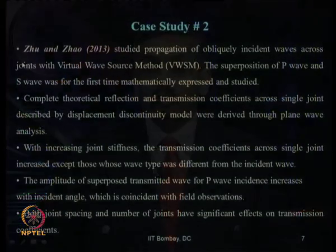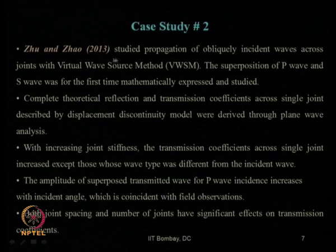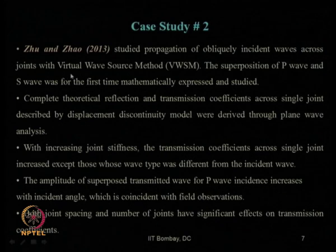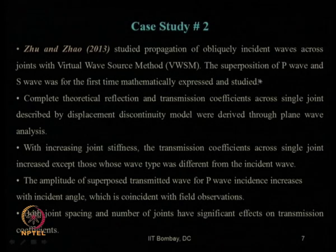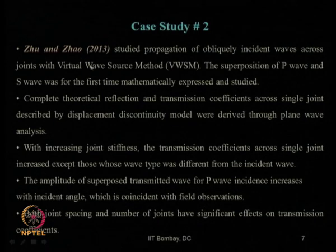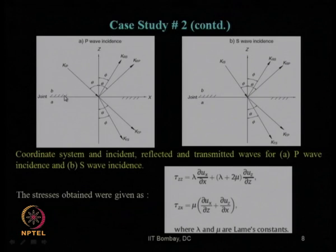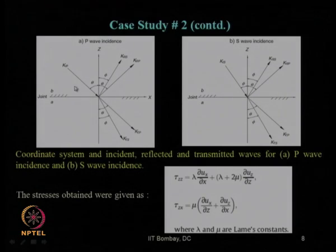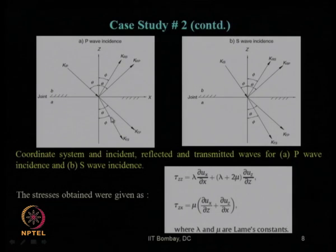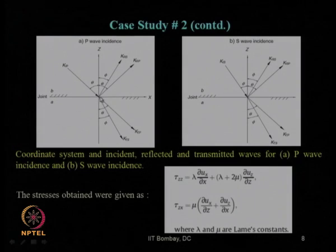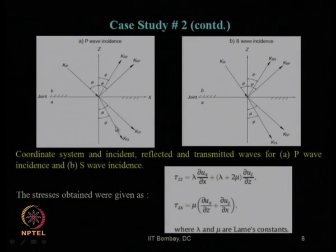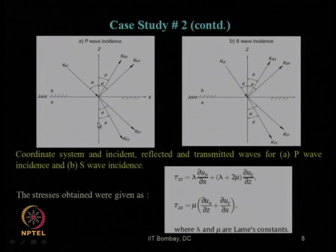In our previous lecture, we also discussed the second case study reported by Zhu and Zhao in 2013. They studied propagation of obliquely incident waves across joints with the Virtual Wave Source Method (VWSM). They mathematically expressed for the first time the superposition of P waves and S waves. At a junction of two layers, if a P wave is incident, how the S wave and P wave get refracted and reflected back in the same and other media is shown.